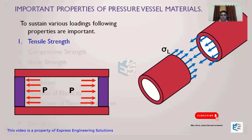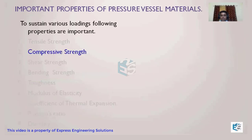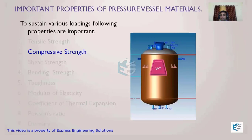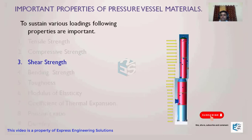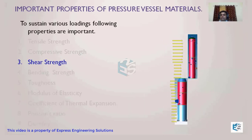The next property is compressive strength. For example, a vessel mounted on support lugs carries fluid weight plus its own weight — all applied downward. Because of this, heavy compressive stresses develop on the vessel wall. Therefore, compressive strength is also a very important property that a pressure vessel must have, equally as important as tensile strength.